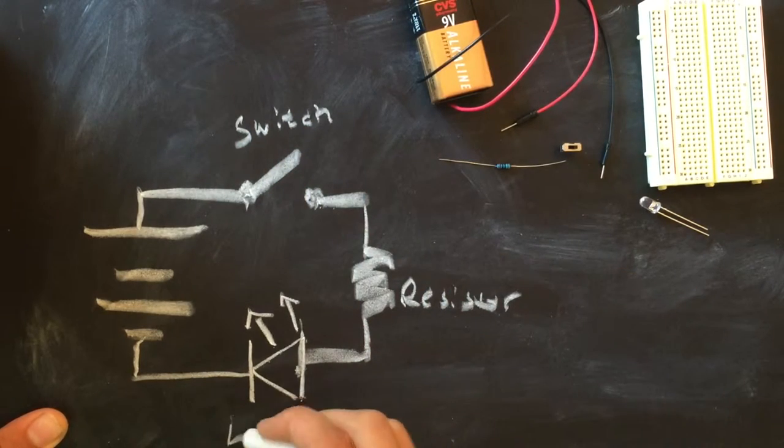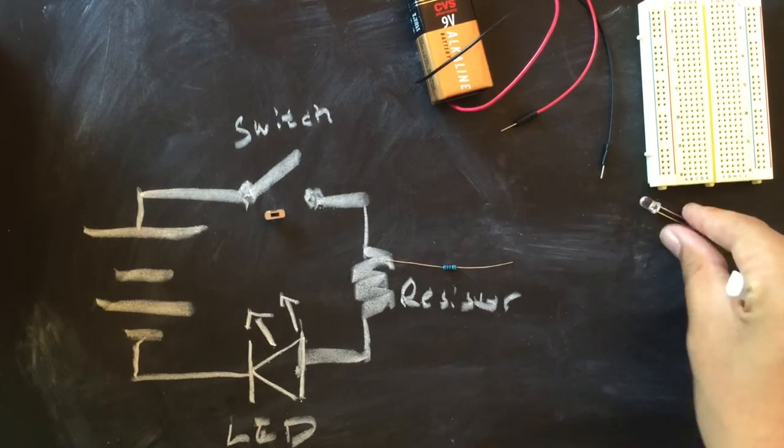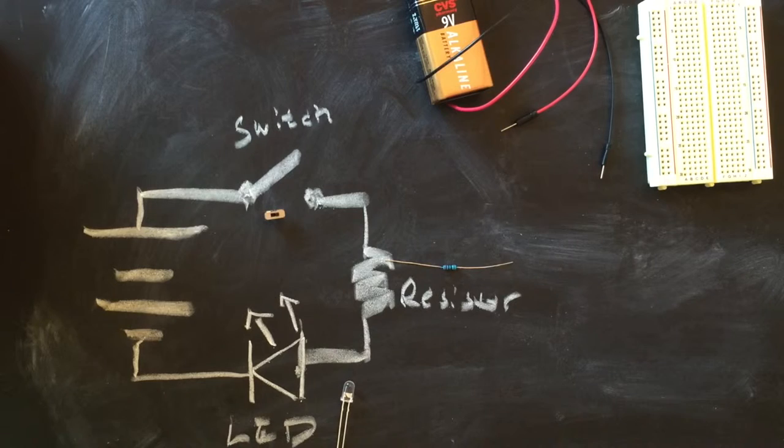The circuit diagram I'm drawing involves our battery and our three electronic components: the switch, resistor, and LED. And just so you get a more clear understanding, here's all of the electronic components right next to their drawings on our circuit diagram.